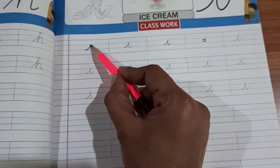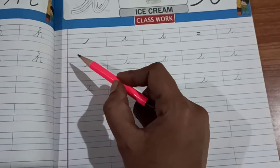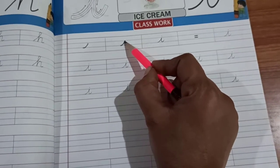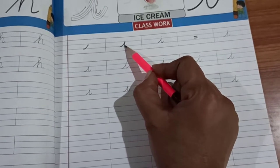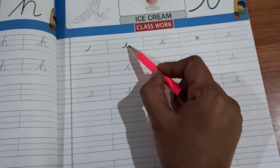First step is a slanting line from third line to second line. Next step is continuation of that, one small curve towards right side.